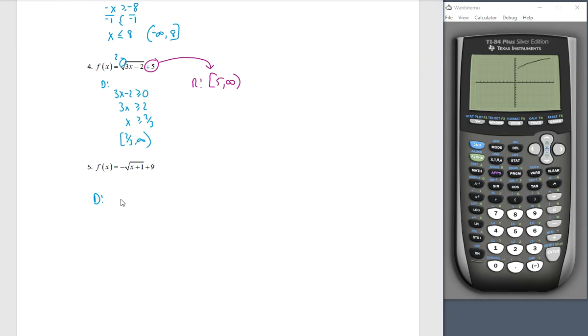For number five, my domain. I take the inside, x plus one, set it greater than or equal to zero. And so I'll get x is greater than or equal to negative one, and a domain from negative one to infinity. But my range. I know it's going to have something to do with a nine, but I also mentioned we have to check out the front. So let's put in negative square root of x plus one, come out of the radical and then add nine. And we'll graph that. Notice how this one is coming down, whereas all of our other radicals were going up.